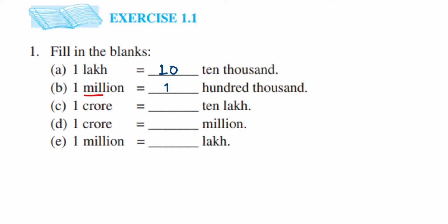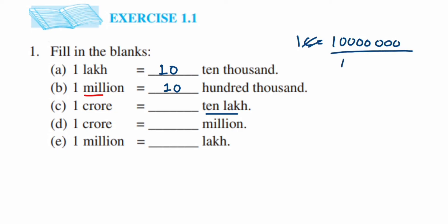Next: one crore equals how many ten lakhs? One crore has seven zeros. Ten lakh has six zeros (ten multiplied by one lakh). Dividing one crore by ten lakh: cancel six zeros from denominator and six from numerator — ten is left.